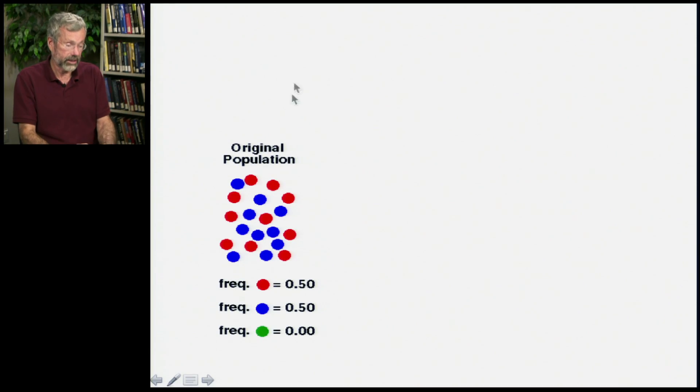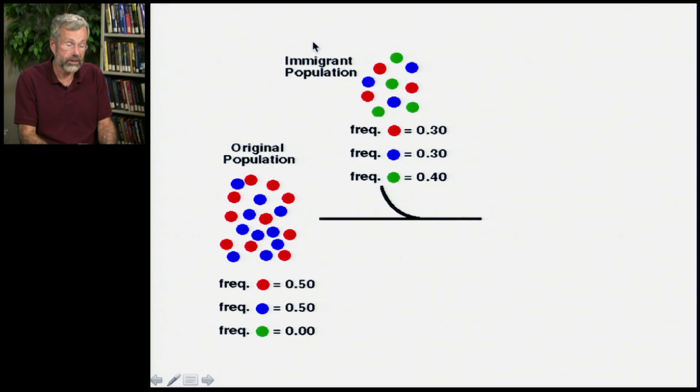Here we have a population that just has two alternative alleles, the red allele and the blue allele. They do not have this third green allele. But should they come into contact with another population because immigrants, say, move in and they do possess the green allele,